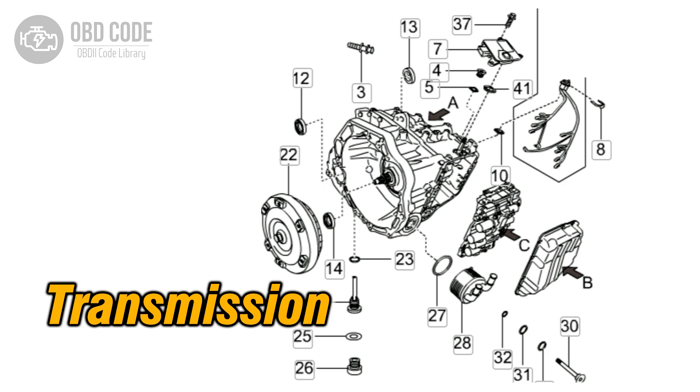If the gear ratio in gear 6 does not match the expected value, the code is set and the check engine light (CEL) is illuminated.